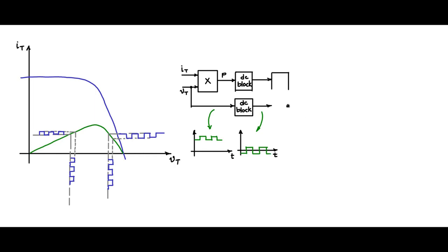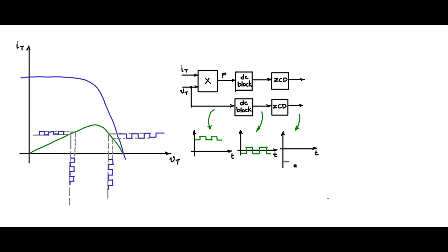After the DC block we pass the signals through a zero crossing detector (ZCD). The reason is that what was shown as a nice rectangular waveform may actually be triangular or have a smoother rise and fall. Passing through a zero crossing detector gives well-defined sharp waveforms — the output goes from −V_cc to +V_cc, giving clean square waves for further processing.